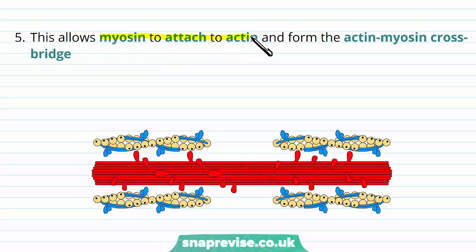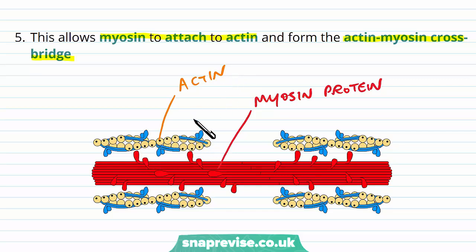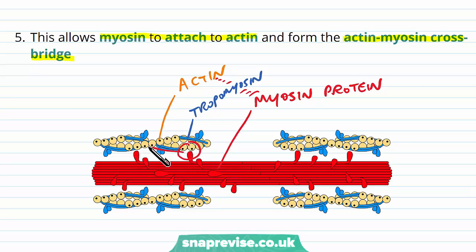Overall this allows myosin to attach to the actin protein, and the interaction between them is called the actin-myosin cross bridge — it's like a bridge between the proteins, hence why we call it a cross bridge. Here we have all these bundles of myosin protein which are the thicker filaments, and the beige circles represent the actin which now have these exposed sites shown as the black dots. The tropomyosin molecule has been moved out of the way, so now the myosin and the actin can interact with each other at all of these sites.